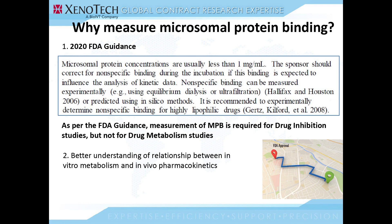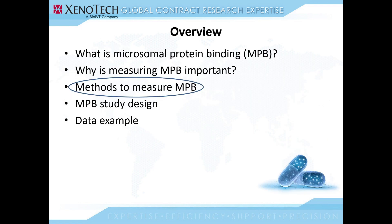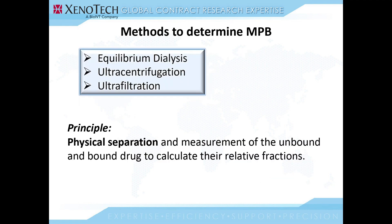It also gives us a better understanding of the relationship between in vitro metabolism and in vivo pharmacokinetics — that is, the more accurate the in vitro data, the better we can understand in vivo pharmacokinetics. Next, we proceed to the methods used to measure microsomal protein binding. There are three main methods: equilibrium dialysis, ultracentrifugation, and ultrafiltration. All three rely on one basic principle, which is physical separation and measurement of the unbound and bound drug to calculate the relative fractions.